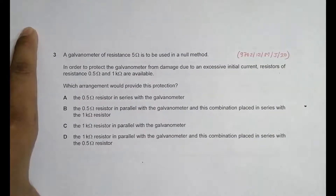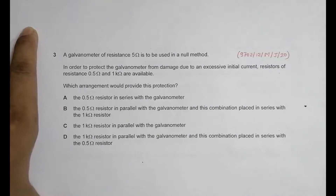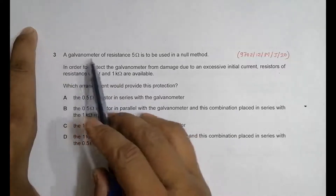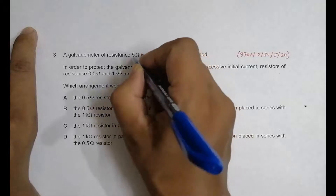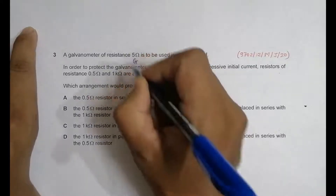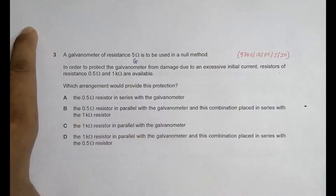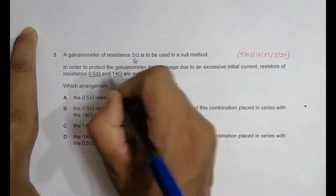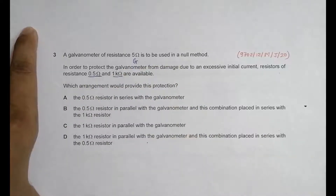Hello folks, today I have a question from the recent May/June 2020 exams. The very first question I'm trying seemed to be the most rigorous one — it took me a long time to solve. This question is about current electricity. It says that a galvanometer of resistance 5 ohm is to be used in a null method. In order to protect the galvanometer from damage due to excessive initial current, resistors of 0.5 ohm and 1 kilo-ohm are available. Which arrangement would provide this protection? We are given four choices.